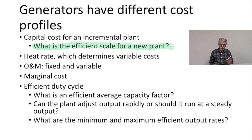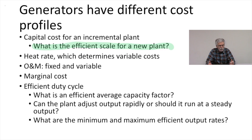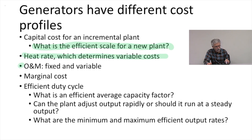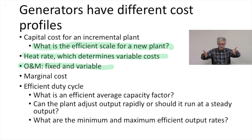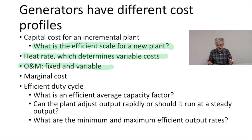A generating unit will have a heat rate — we talked about heat rates before. The heat rate is important because with fossil fuel fired power plants, the heat rate determines most of the variable cost of the power plant. So we'll be interested in the capital cost, the heat rate, and the operation and maintenance costs. We'll divide those up into fixed and variable costs, but any kind of new plant is going to have its own set of operation and maintenance costs as part of the plant's overall cost picture.